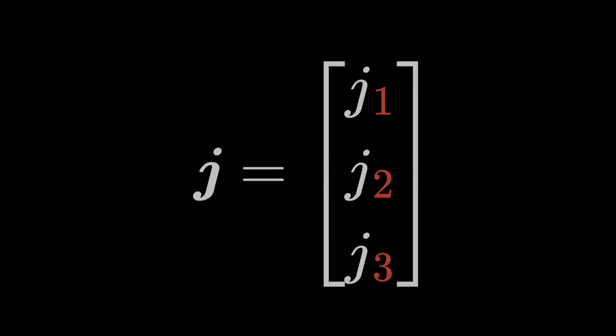A somewhat more complex tensor, let's call it J, is a first-order tensor. This is a vector with three components J1, J2, and J3 in three-dimensional space.